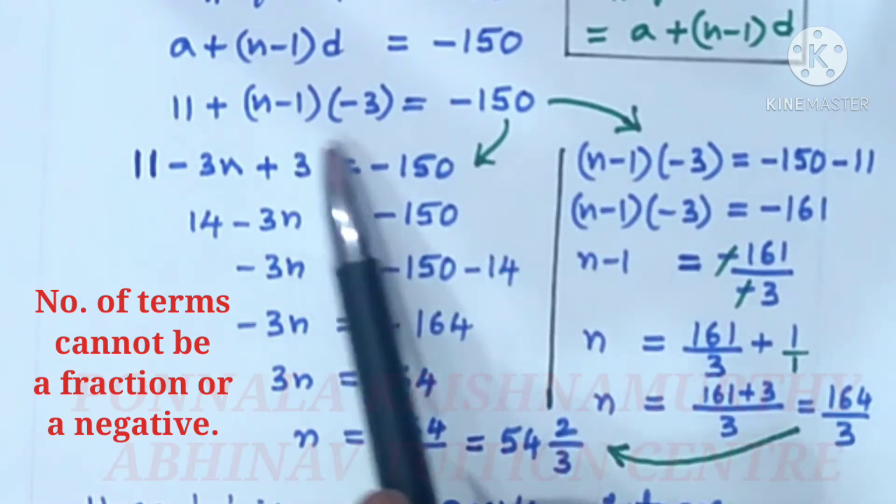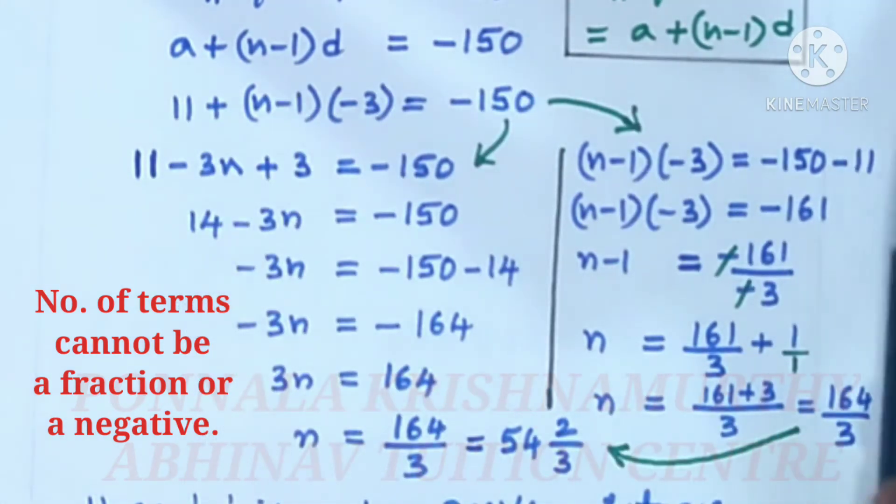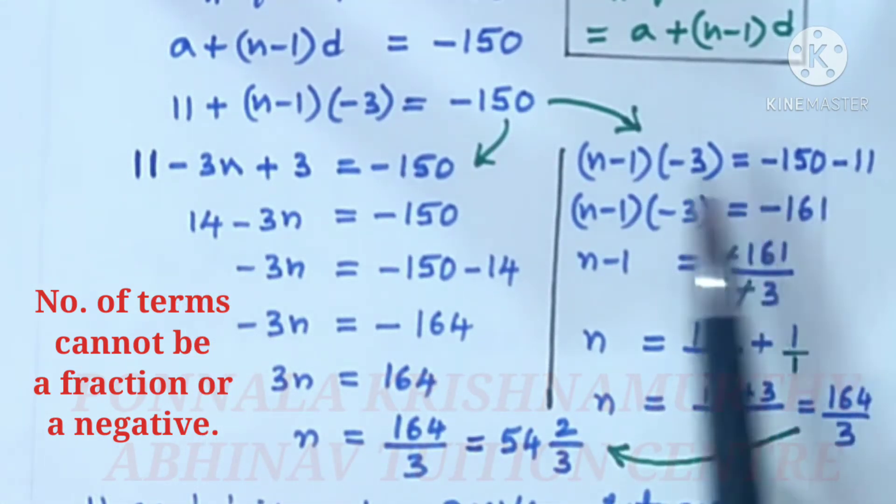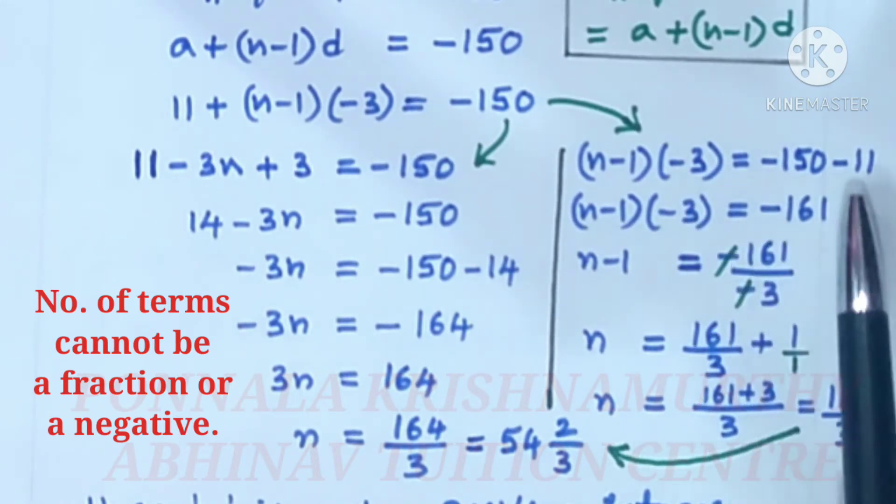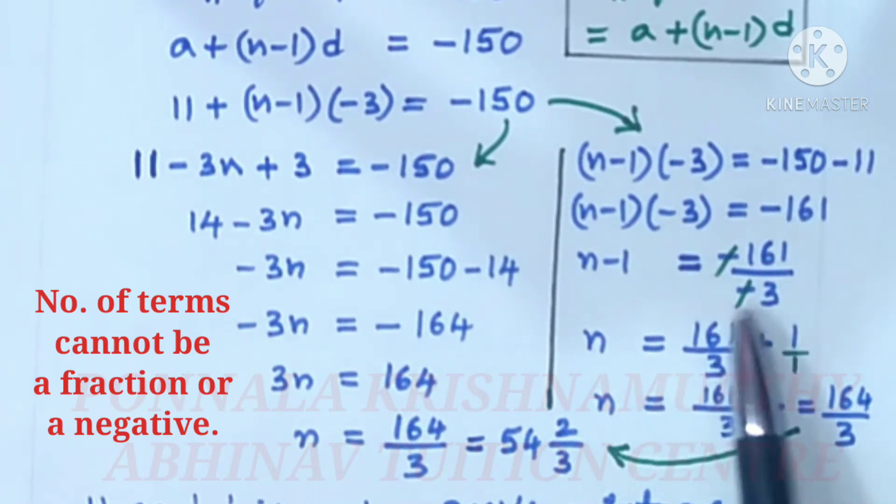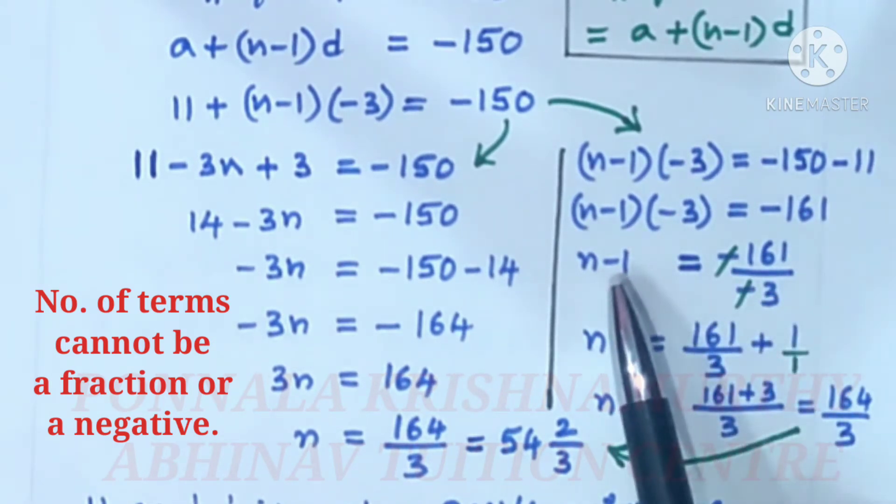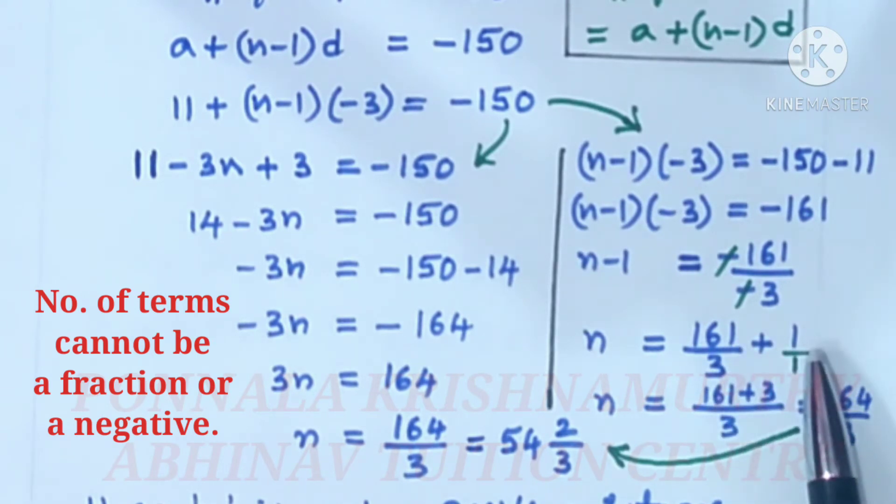In this method, n minus 1 into minus 3 is equal to minus 150, and this plus 11 becomes minus 11 after coming to the right hand side. Now, n minus 1 into minus 3 is equal to minus 161. n minus 1 is equal to minus 161 by minus 3. Minus minus cancel. Now, n is equal to 161 by 3 plus 1. LCM is 3, so n is equal to 164 by 3, that is 54⅔.